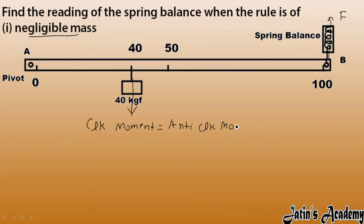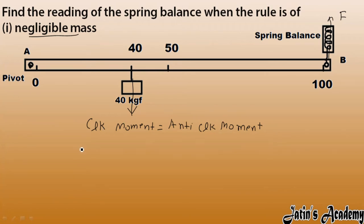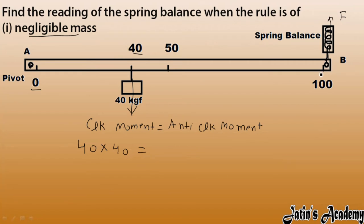The definition is: moment = force × perpendicular distance from the fixed or hinged point. This fixed point is at A. The 40 kgf force creates a clockwise movement. The clockwise moment is force × perpendicular distance, which is 40 kgf × 40 centimeters. The spring force F creates the anticlockwise movement.